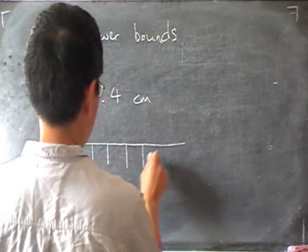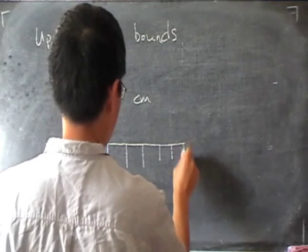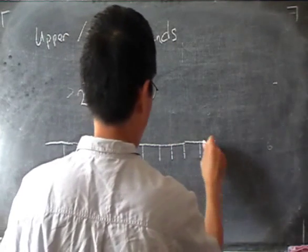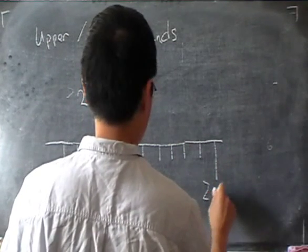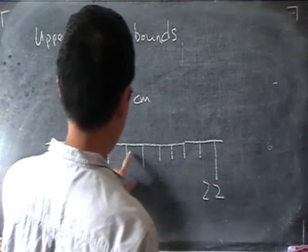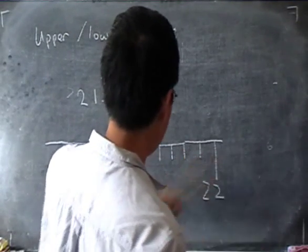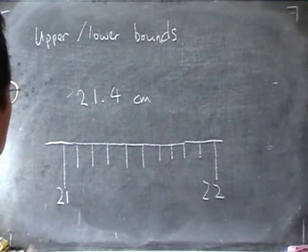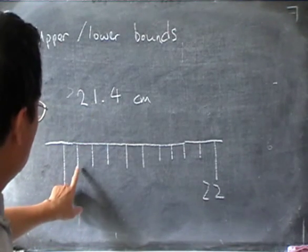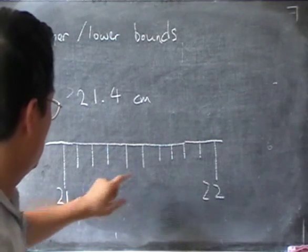1, 2, 3, 4, 5, 6, 7, 8, 9, 10. That's the 22. So 21.4 would be 1, 2, 3, 4. It would be that.